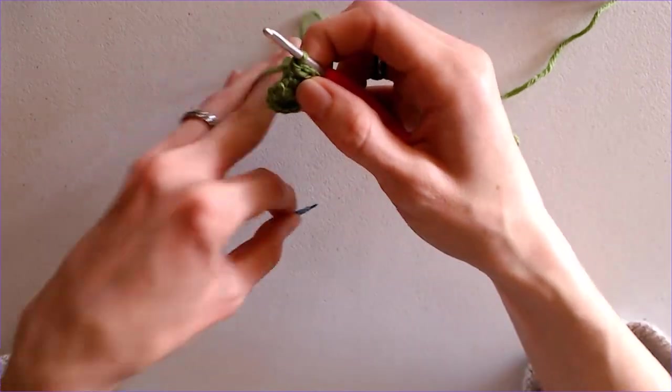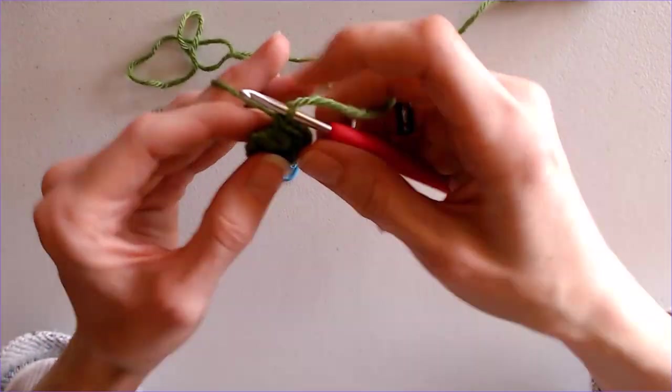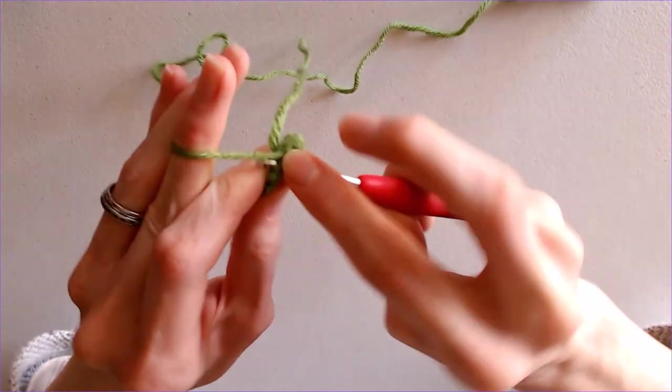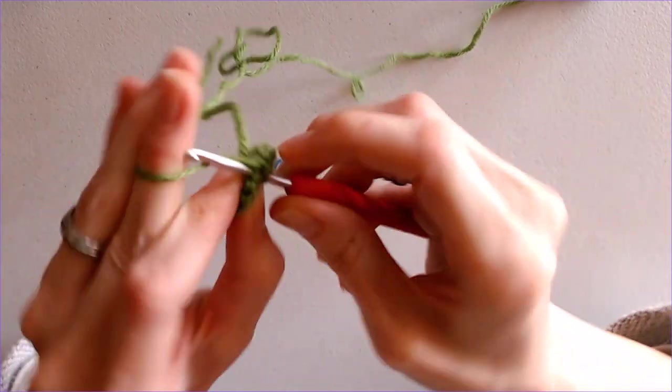Again, since I'm just expanding this circle, I'm just going to work the final two single crochets into that very first stitch there to complete my round.